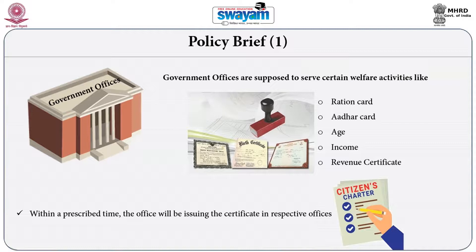You have to tell that within this time I will accept your applications, within this time I will consider the application, and within this time, if it is fulfilling all the conditions or requirements, it will be taken up. If it is not fulfilling conditions, a letter will be written informing you that you have to supply such-and-such document or proof of residence. Then you have to do that, and thereafter issue the permission or certificate within a prescribed time limit.